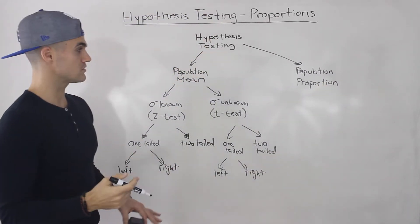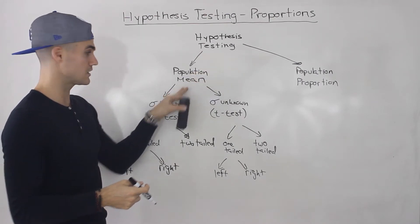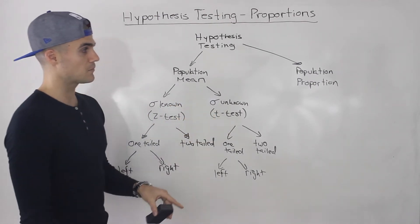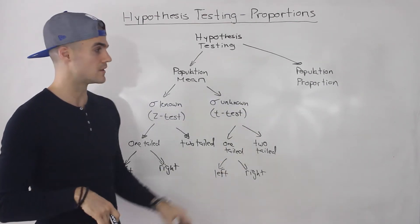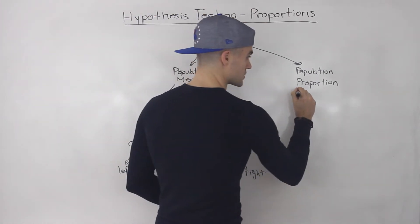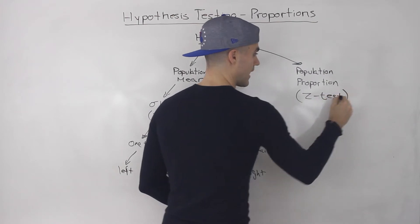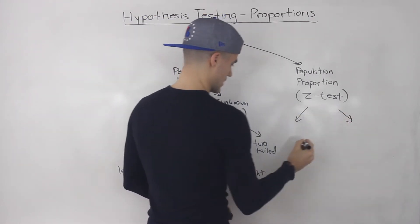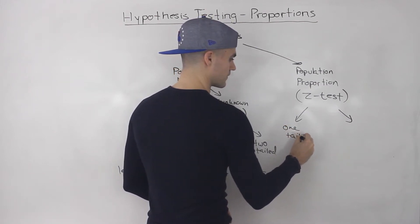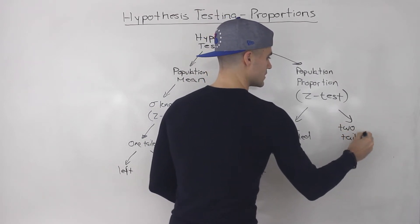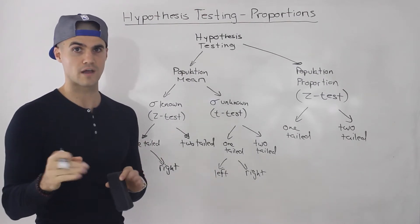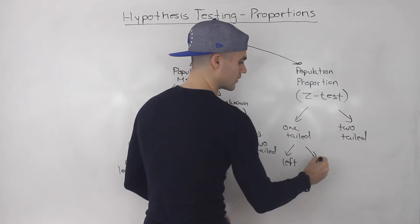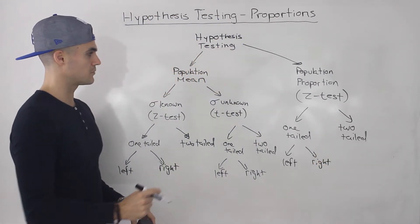Now if you remember from confidence intervals, this looks very similar. With confidence intervals, we did it for the population mean — when the population standard deviation was known we used a Z distribution, when it was unknown we used a T distribution. And if you remember confidence intervals for the population proportion, we only used a Z distribution. Well, same thing with hypothesis testing: with population proportions, we're always going to be doing a Z test, so you don't have to worry about that step. But population proportions can also either be one-tailed or two-tailed tests.